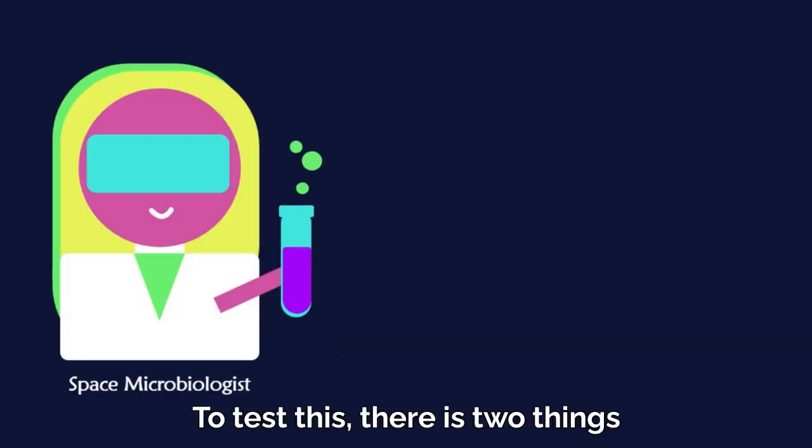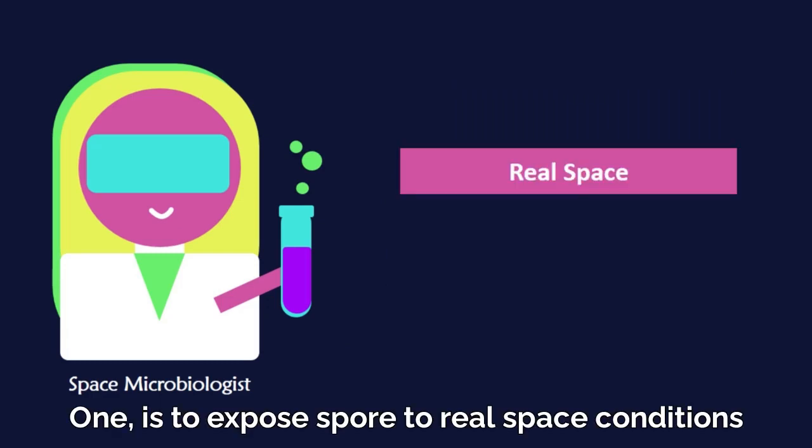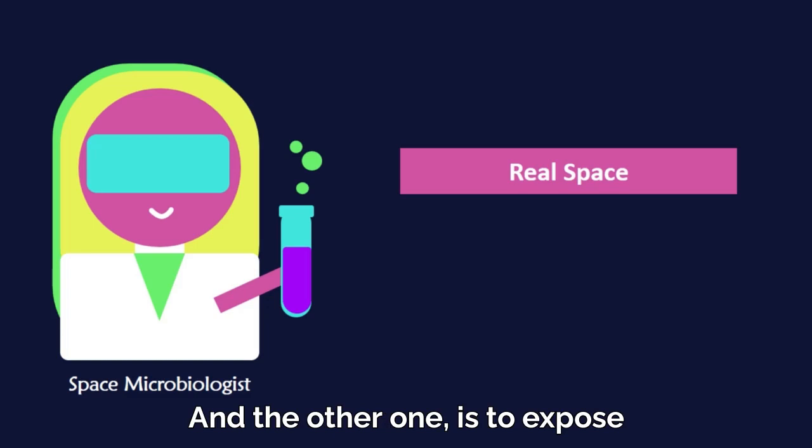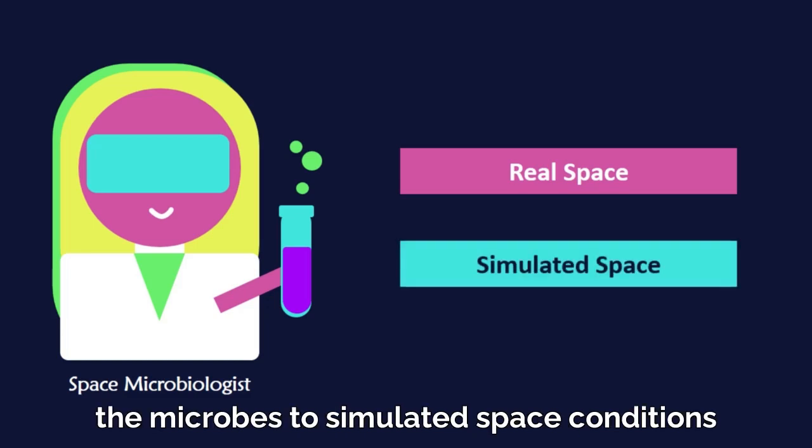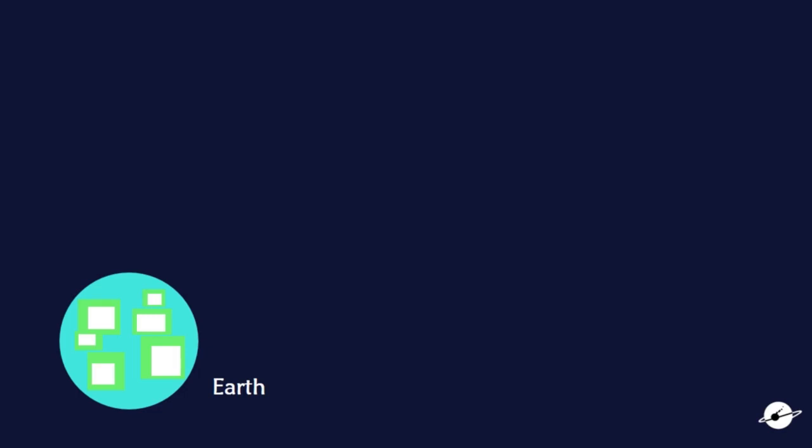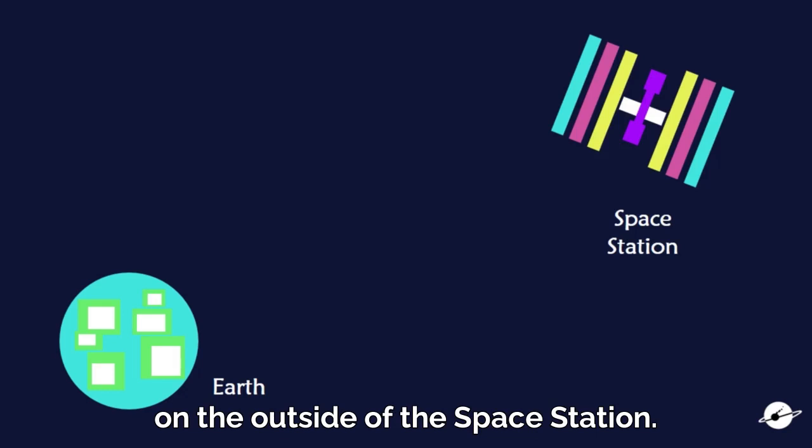To test this, there's two things that space microbiologists can do. One is to expose spore to real space conditions. And the other one is to expose the microbes to simulated space conditions. Imagine, let's see if spore could actually survive on the outside of the space station, where there's radiation and vacuum and really extreme temperatures. How could we do this?